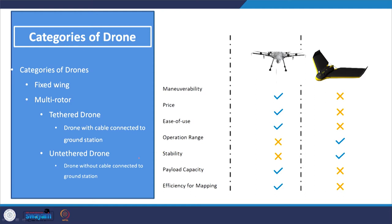Looking at a comparison table of drones classified according to their wings, we can compare specifications such as maneuverability, price, ease of use, operation range, stability, payload capacity, and efficiency for mapping. There are tick marks for multi-rotor drones and for fixed-wing drones. There are certain applications for which the multi-rotor is useful, and for other applications the fixed wing is very useful.